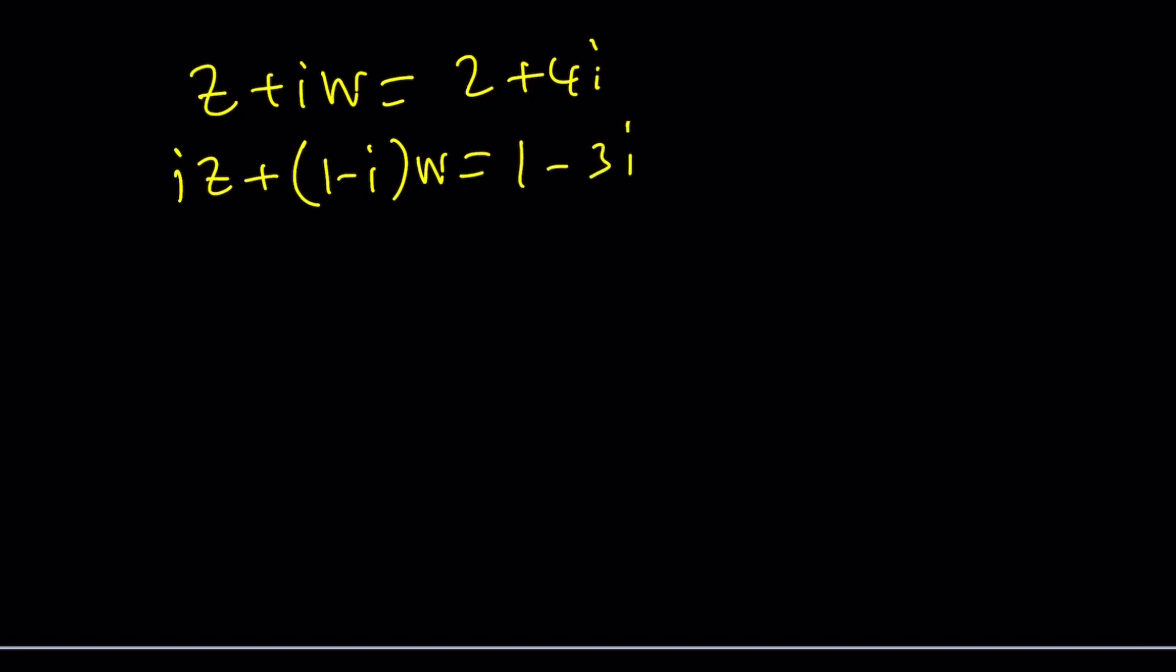Now to solve systems we have different methods. We can use substitution, elimination, and so forth. In this type of situation we can do the same thing. I'd like to use elimination because elimination is fun. Let's go ahead and get rid of Z which looks a little easier to me. I want to multiply the top equation by negative I.